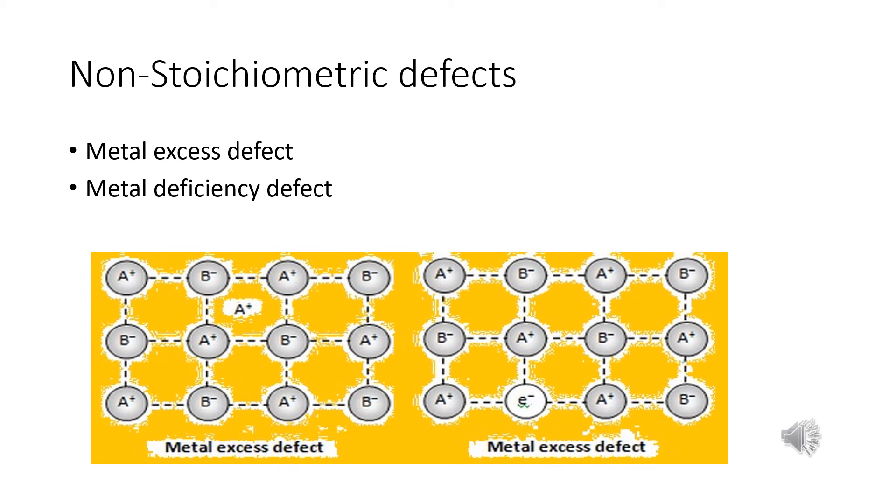And what is metal deficiency defect? There are many solids which are difficult to prepare in the stoichiometric compositions and contains less amount of metal as compared to the stoichiometric proportion. So, in certain cases, one of the positive ions is missing from its lattice site and the extra negative charge is balanced by some nearby metal ion acquiring two charges instead of one. There is evidently a deficiency of the metal ions although the crystal as a whole is neutral.